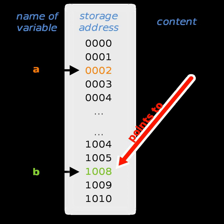Pointers are a very thin abstraction on top of the addressing capabilities provided by most modern architectures. In the simplest scheme, an address, or a numeric index, is assigned to each unit of memory in the system, where the unit is typically either a byte or a word, depending on whether the architecture is byte-addressable or word-addressable, effectively transforming all of memory into a very large array. The system would then also provide an operation to retrieve the value stored in the memory unit at a given address, usually utilizing the machine's general purpose registers.